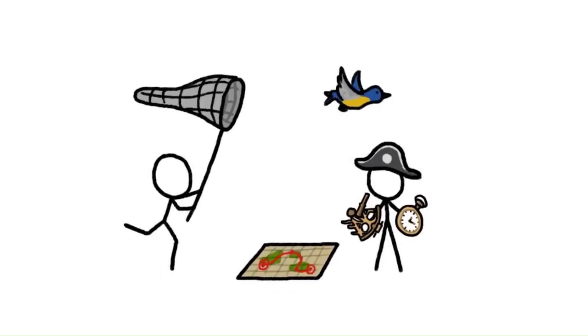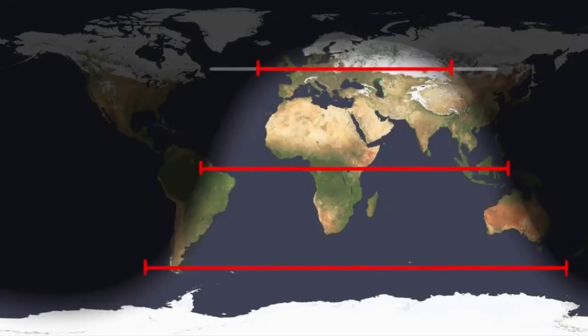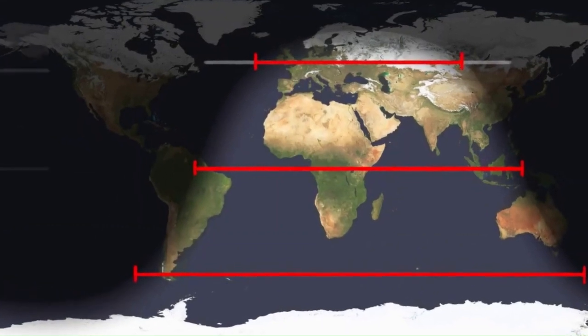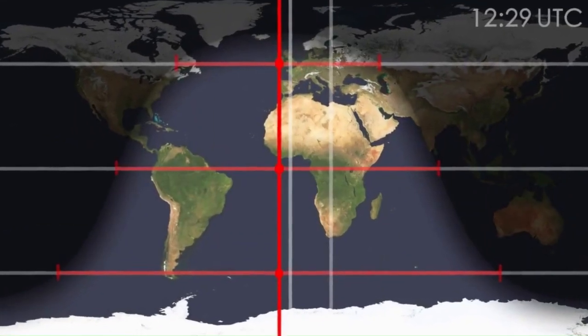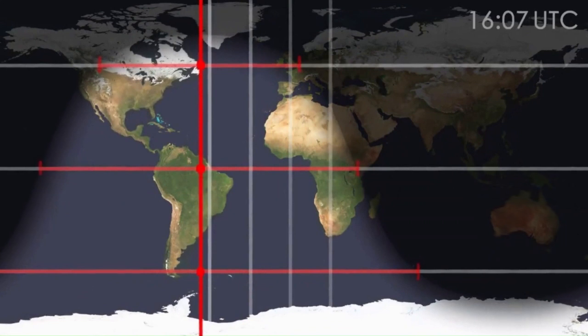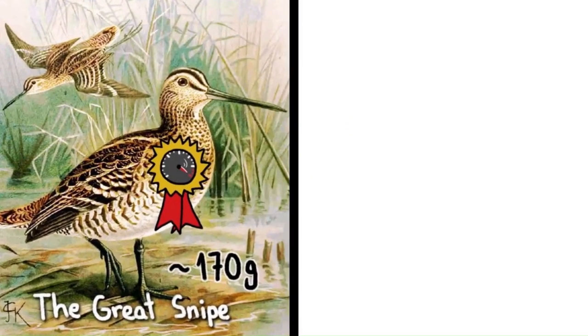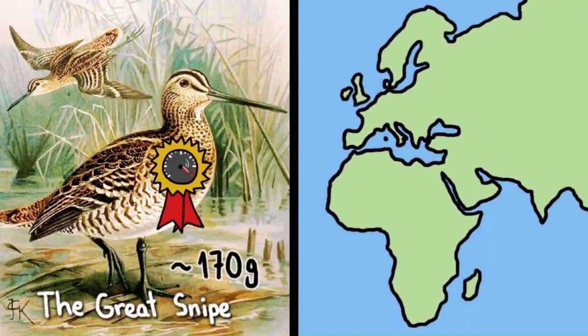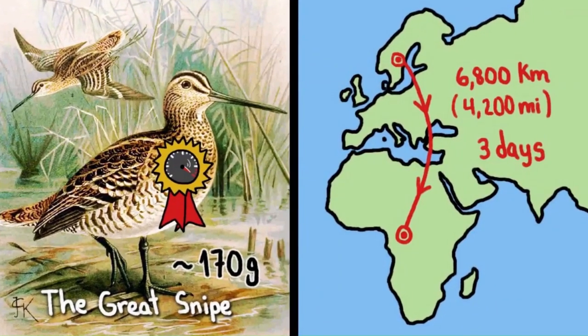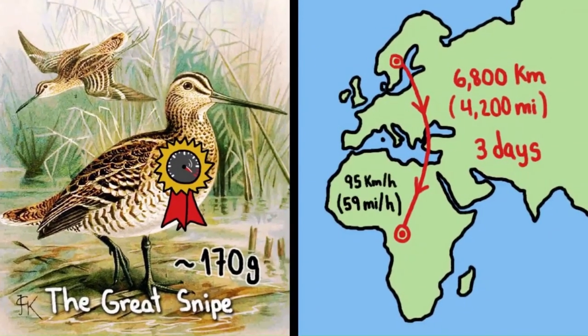Luckily, scientists have been clever enough to realize they don't need satellite tracking at all. Instead, we can fit birds with a tiny light-level recorder, clock, and memory chip which together weigh as much as a raisin. Lightweight light recorders don't broadcast, so we need to recapture the birds to get the data, but we can then use ancient navigation methods to reconstruct the birds' daily location over the course of its journey.